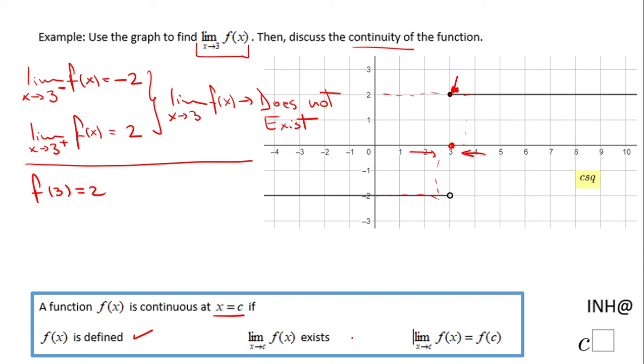But once we move to the second condition, the limit does not exist when we go closer to c—in this case, 3. So I don't even have to check the third condition. I know now the function is not continuous at x equals 3.